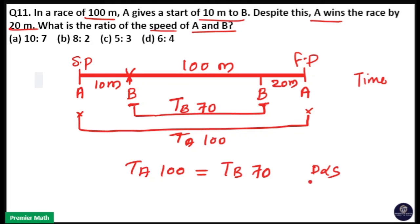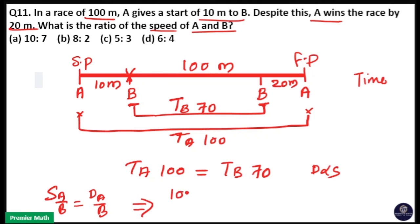Since time is constant, the distance ratio gives the speed ratio. Speed of A to speed of B equals distance covered by A to distance covered by B, which is 100 divided by 70 — so the answer is 10 to 7.